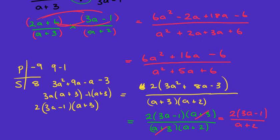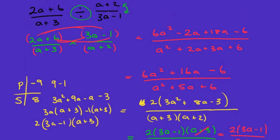To recap: for division, rewrite the question as multiplication and flip the second fraction to find its reciprocal, then times the tops and times the bottoms. When you have two-term expressions on the bottom, it's often better to leave them in factored form, because after expanding the top you may be able to factorize and cancel. There are often shorter shortcuts — for example, you could have factorized the two out of the numerator straight away.